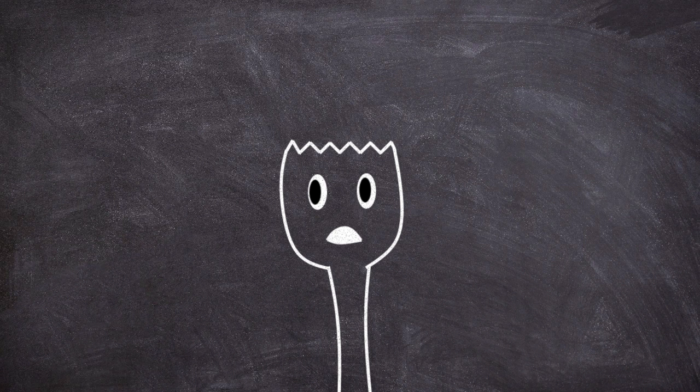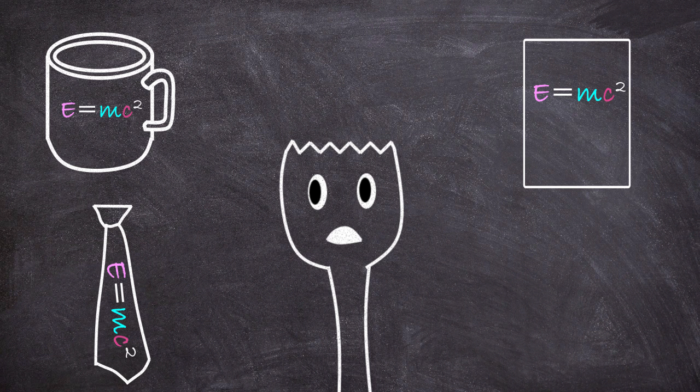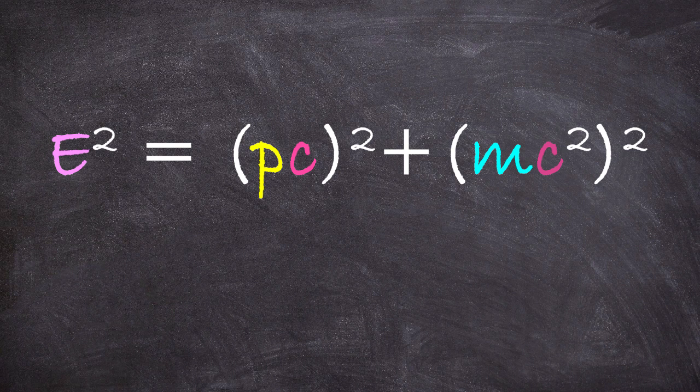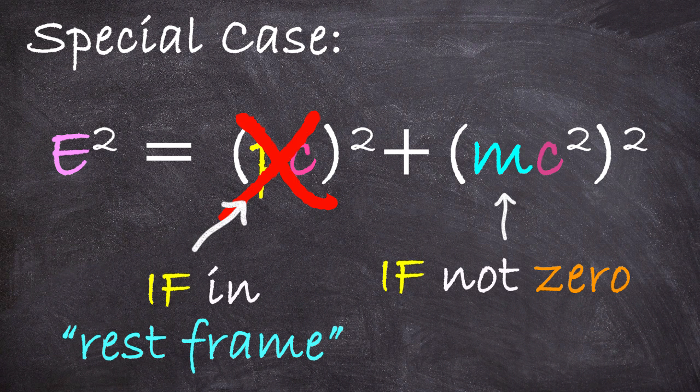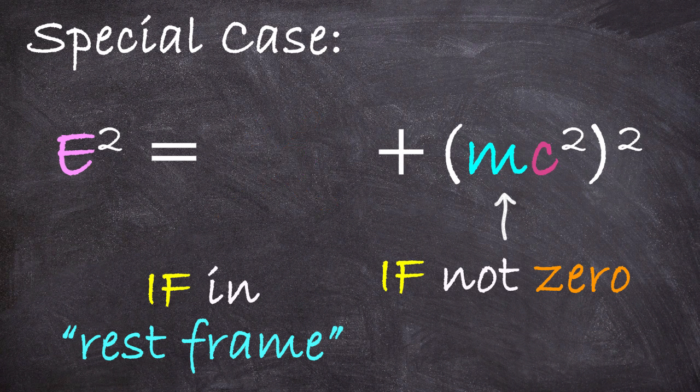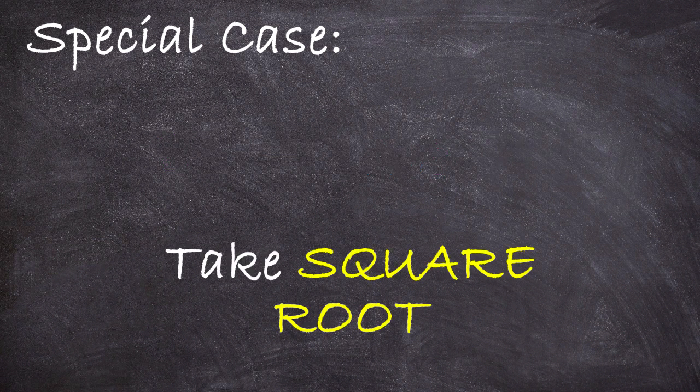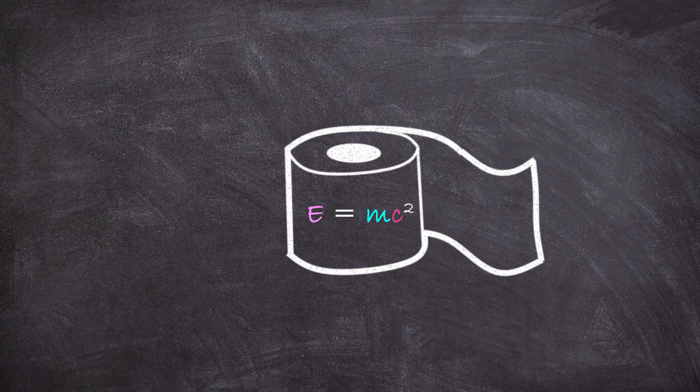But I mean, how can a bajillion novelty coffee cups and neckties and posters, and I think I even saw some E equals MC squared underwear once, be wrong? Well, if we look at this equation and we imagine the special case where we do have something with mass, and we're kind of just moving along beside it, we're in the so-called rest frame of the object, then its momentum is zero, because we're in its rest frame. And under those specific assumptions, this equation reduces to the famous E equals MC squared. And let's face it, this simplified form is nice, it's pithy, and it's much easier to fit on the side of novelty toilet paper.